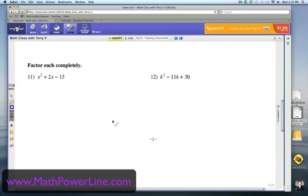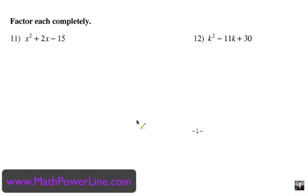This is Problem Set 3 in Factoring Polynomials. 11 and 12 here, pictured on the screen, are trinomials that need to be factored. And first, let me just double check here that you understand. Cross that out, we don't need that.